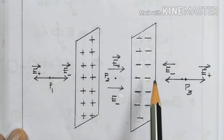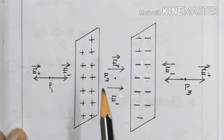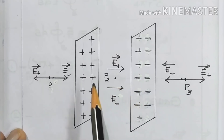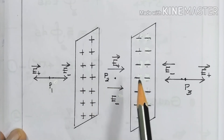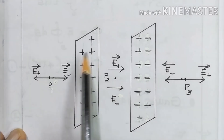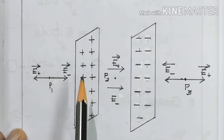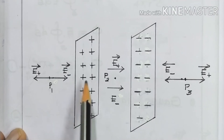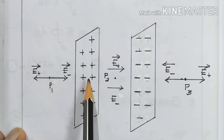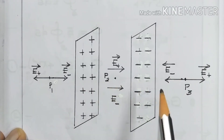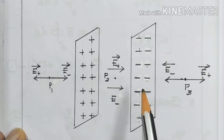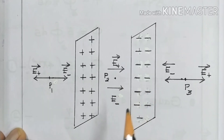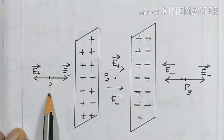Now, what about the direction of the electric field? We all know that electric field lines originate from positive charge and terminate at negative charge. So the electric field lines from the positive sheet go radially outward, and the electric field lines terminate at the negative sheet — they come towards it. In the case of point P1, let us analyze the electric field.